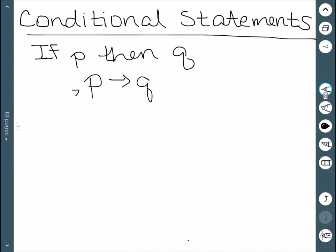which we denote by P arrow Q. We call P the hypothesis and Q the conclusion.